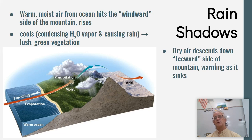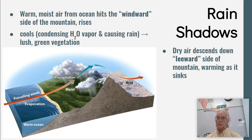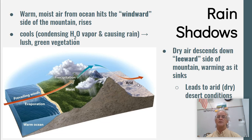On the leeward side of the mountain, the air is going to warm up. As it warms up, the moisture is not going to be able to come out, and therefore it's going to cause dry desert conditions.